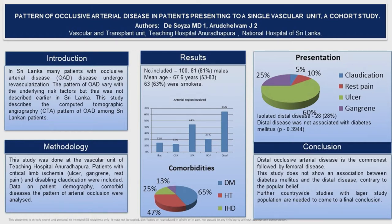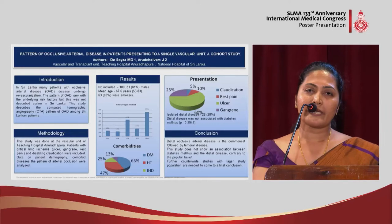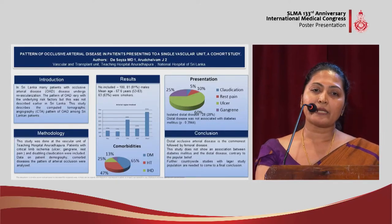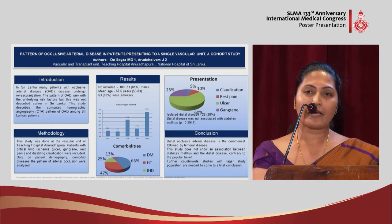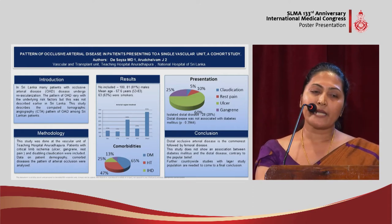In the results, mostly the occlusive arterial disease involves the males, around 81%. The mean age is 67%. Most of them are smokers — 63%. In the co-morbidities, it's mostly diabetic at 65%, and also hypertension, ischemic heart disease, and chronic kidney disease.